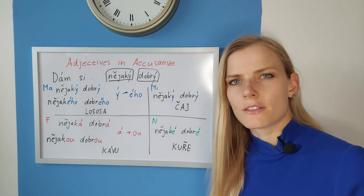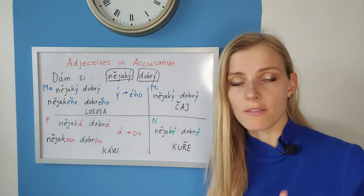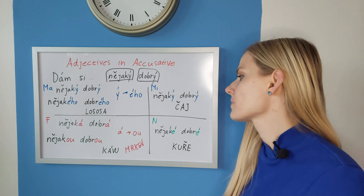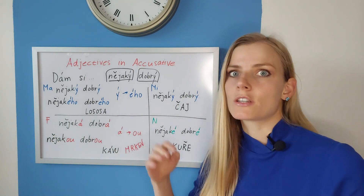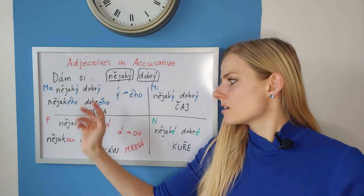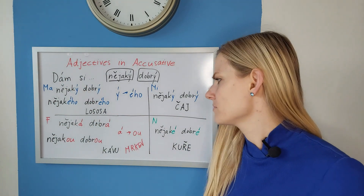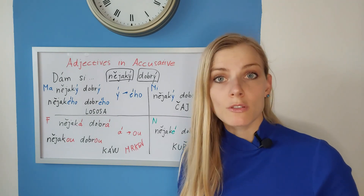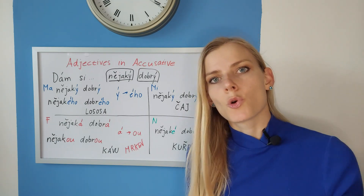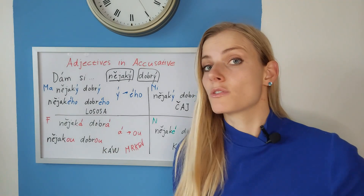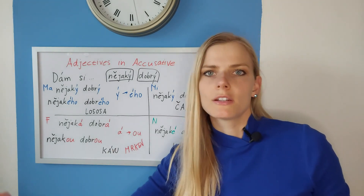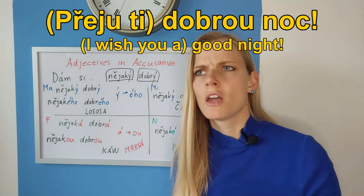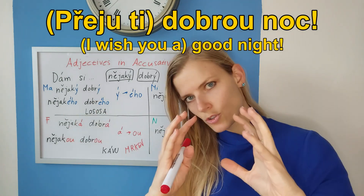Remember we had an example with mrkev. Mrkev is a feminine noun that doesn't change because it ends with a consonant. However, the adjectives would change in the accusative: Dám si nějakou dobrou mrkev. And that's why you would hear the phrase Dobrou noc — noc is a feminine noun and dobrou is the adjective, because you are actually saying 'I wish you a good night' in accusative. The full form would be Přeju ti dobrou noc.